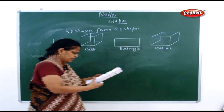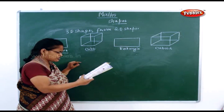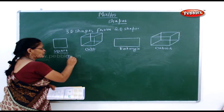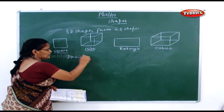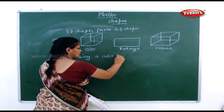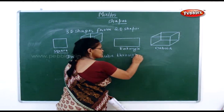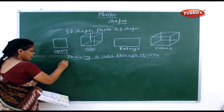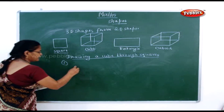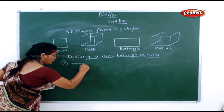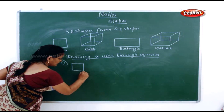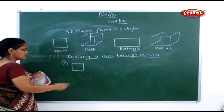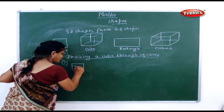Here we go — there are some two-dimensional shapes. Now what is given is you have to draw the cube. Drawing a cube through squares — how will you draw a cube through squares? This is what we are going to do now. The first step: draw a square on the sheet of paper.